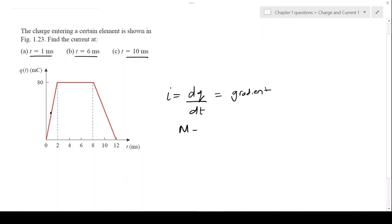What will that gradient be? The gradient is going to be the change in y, which is 80 minus 0, over the change in x, which is 2 minus 0. So that's 80 over 2, which gives you 40.